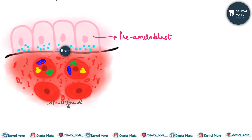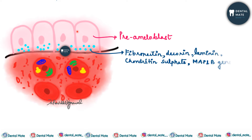Under the organizing influence of the inner enamel epithelial cells, which secrete proteins such as fibronectin, decorin, laminin, chondroitin sulfate, and the MAP1B gene, the divided cells with organelles differentiate.